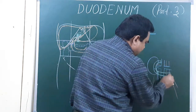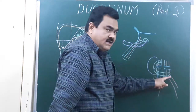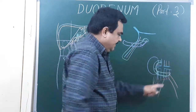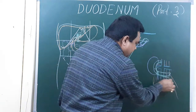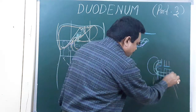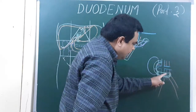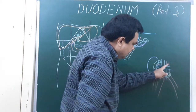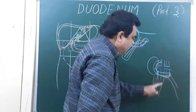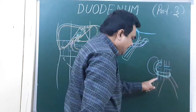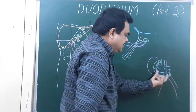The third part is related to these structures posteriorly: gonadal artery, inferior mesenteric artery, abdominal aorta, inferior vena cava, and the ureter.